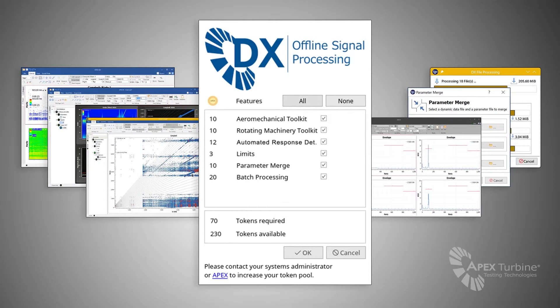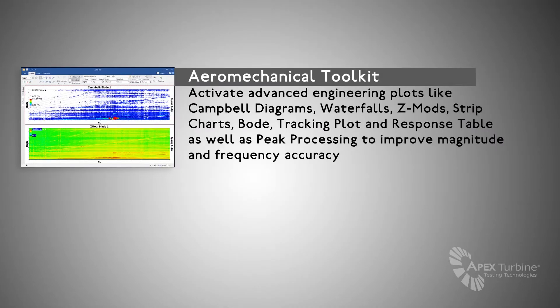With token-based licensing, users have access to all the great offline signal processing features DX offers. The Aero Mechanical Toolkit includes advanced engineering plots like Campbell diagrams, waterfalls, Z-mods, strip charts, Bode, tracking plot, and response table, as well as peak processing to improve magnitude and frequency accuracy.